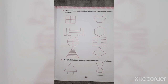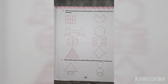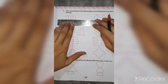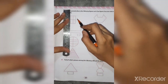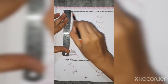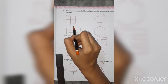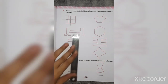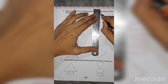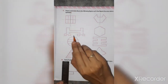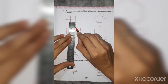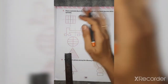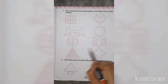Draw a line of symmetry in the following figures such that the figures become mirror symmetry. In question 5 you have to draw a line of symmetry so the figures become mirror symmetrical — very easy. In this figure we can draw it here or here. As we all know, a rectangle has two lines of symmetry. Draw a line of symmetry exactly in the middle of the shape.